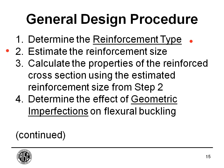The second step is to estimate the reinforcement size. This is basically the same as what you would do with a new building — you have to estimate the beam and column size. It's done with some preliminary calculations and possibly engineering judgment. If you're really not sure, the best thing to do is just assume a size and go in and calculate it, doing several iterations. Once you get that estimated reinforcement size, you'll go on to number three, which is probably going to be the most time-consuming part: calculating the properties of the reinforced cross-section, assuming the reinforcement size from step two.